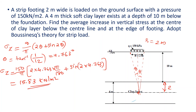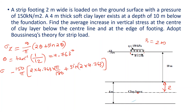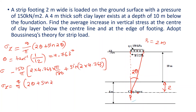Now for the stress at the edge of the footing, we use a different angle. At the edge position, the equation is σz = (q/π) × (2θ + sin 2θ × cos 2α), where the geometry changes because the point of interest is at the edge.